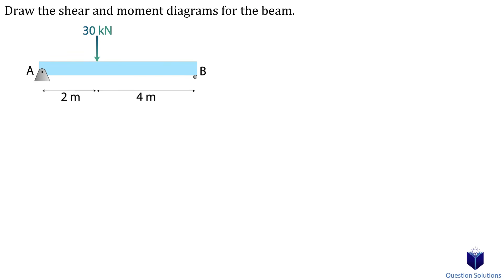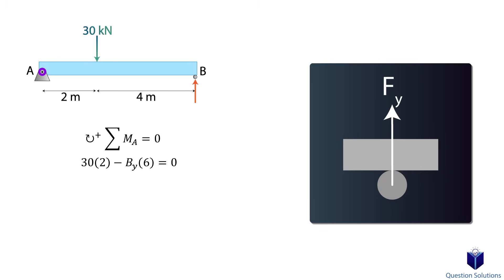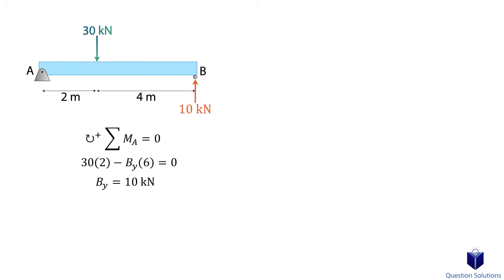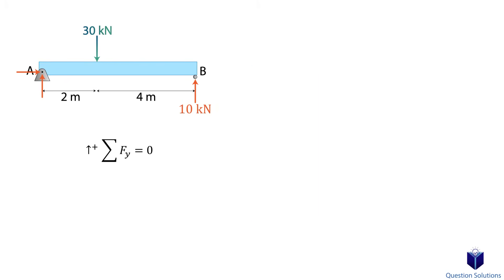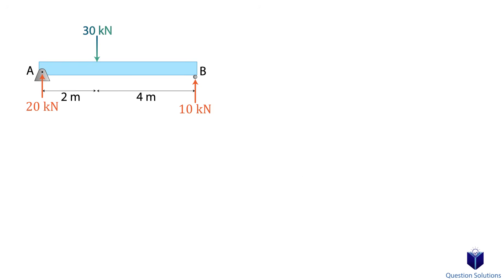Let's take a look at our first example. We need to draw the shear and moment diagrams. The first step is to figure out the reactions at pin A and roller B. If we write a moment equation about point A, that eliminates the two reactions and we can directly solve for the reaction at B. Remember, B is a roller, which means it'll only have a single force upwards. Next we write an equation of equilibrium for the y-axis forces to figure out Ay. There is no x reaction since there are no horizontal forces. Now we figure out where changes on the beam occur: the 30 kN force is applied 2 m from A, giving us two segments.